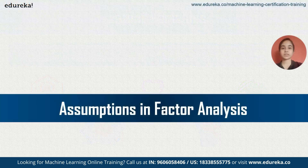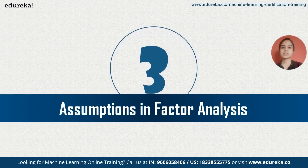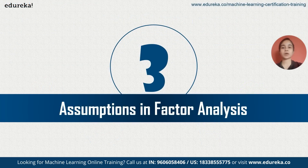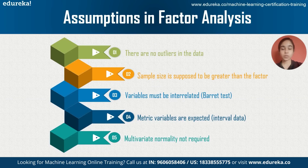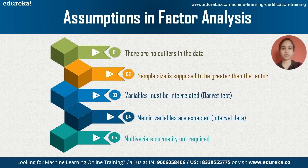In order to perform factor analysis, certain assumptions are made about the data. Firstly, the data is assumed to be clean — there should be no outliers or missing values. Secondly, the sample size is expected to be greater than the number of factors. A general principle is the minimum 1-to-5 ratio: for 10 factors, you should have at least 50 samples.